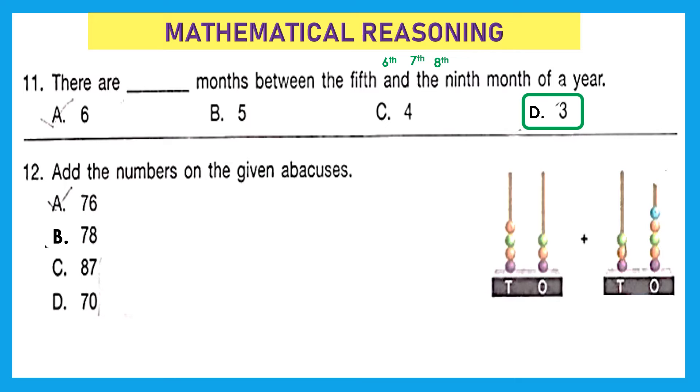Question 12: Add the numbers on the given abacus. Okay, let's find the numbers. So the first abacus is 43, and the second abacus shows 35. Now we have to add these: 43 plus 35 equals 78. Option B, 78 is the right answer.